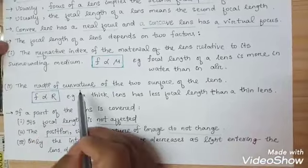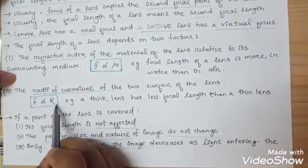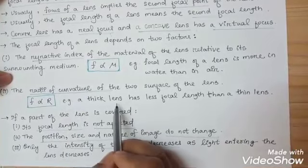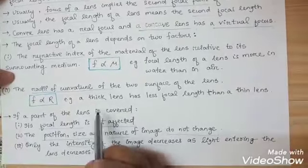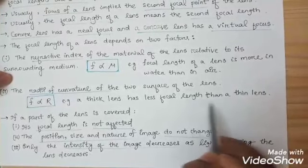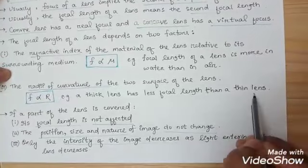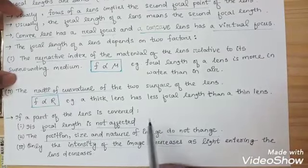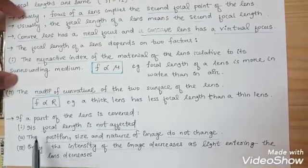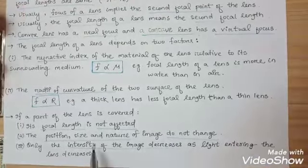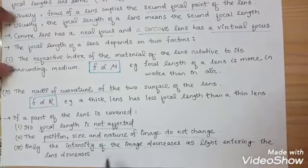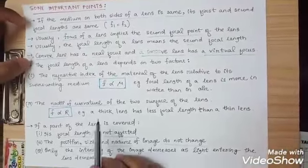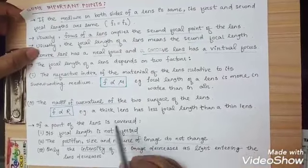The second factor is radius of curvature: if the radius of curvature is more, the focal length is also more — focal length is directly proportional to radius of curvature. For example, a thick lens has a smaller radius than a thin lens, so a thick lens has less focal length than a thin lens. If part of the lens is covered, the focal length is not affected, the position, size, and nature of the image do not change — only the intensity of the image decreases, as less light enters the lens.